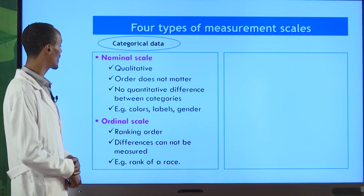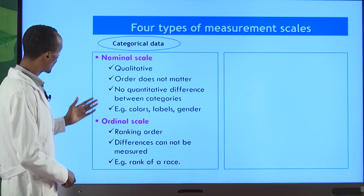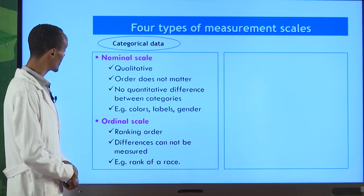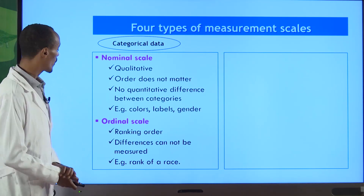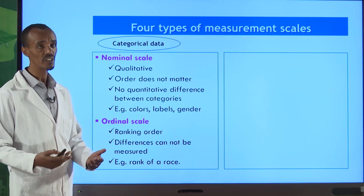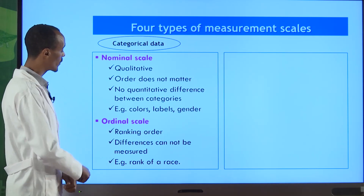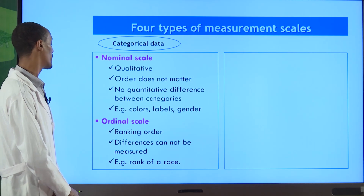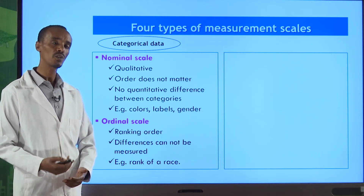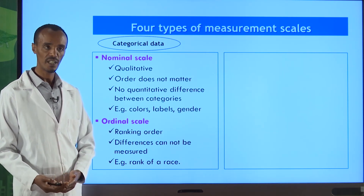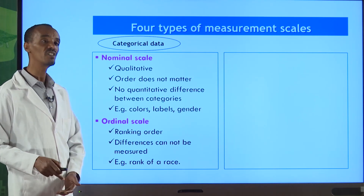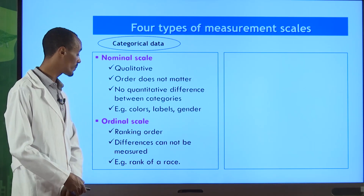The second categorical data type is the ordinal scale. Opposite to the nominal scale, in this case the order matters — the rank is important because, as the name indicates, it requires an order. For example, in a race: who stood first, who is second? The order matters here. One key characteristic is that the difference cannot be measured — if we have first, second, and third, we cannot exactly measure the distance between each ranking. Although it has ordering, the difference cannot be computed.